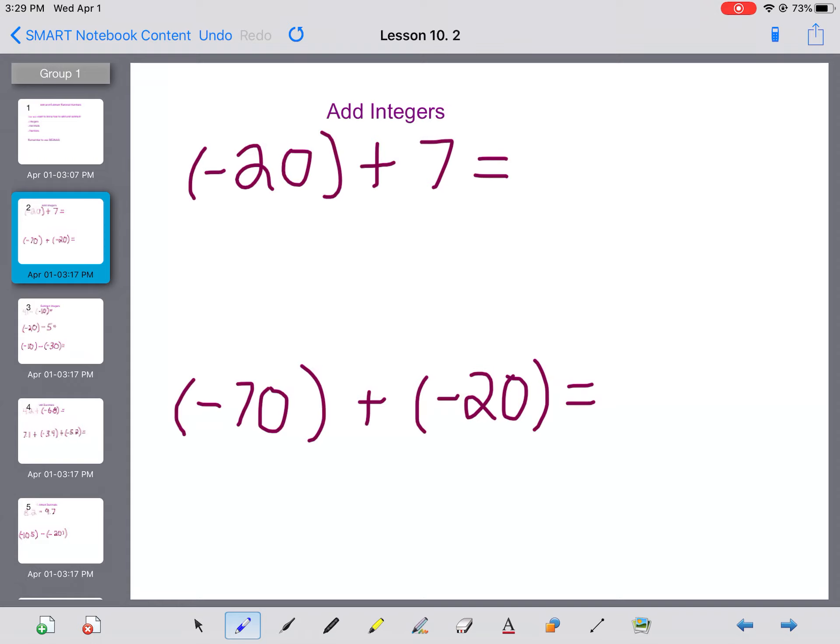So let's take a look here. We have negative 20 plus 7. So when you're adding integers, what you can do is you can think back to our integer unit where we talked about the absolute value of two numbers. So we can talk about the absolute value of negative 20, which is 20.